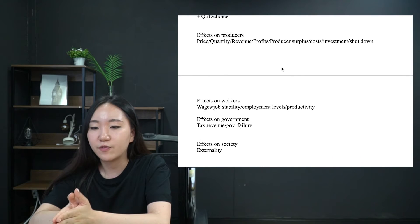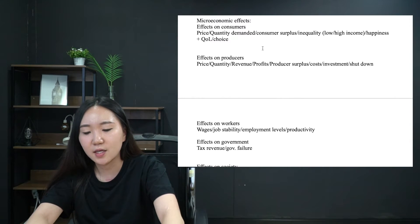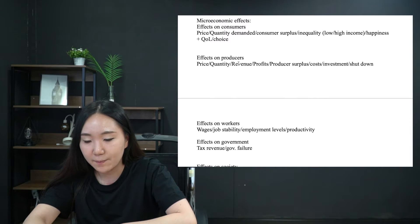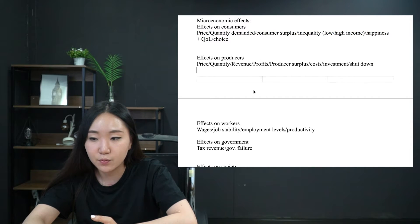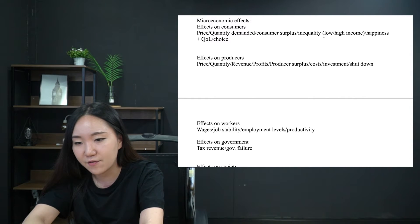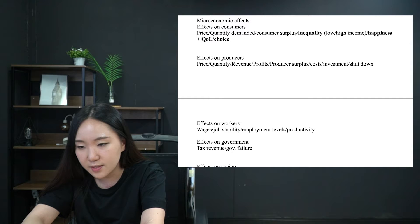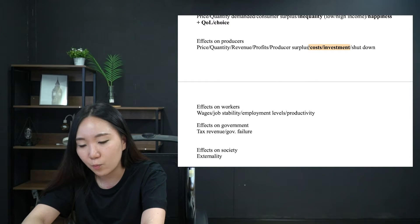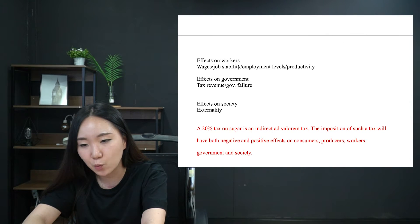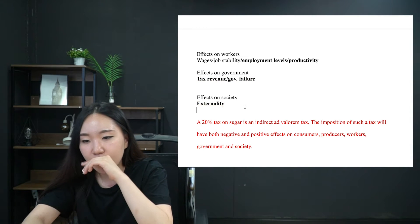For microeconomic effects, I've made a video that organises it slightly better, but essentially you split it into consumers, producers, workers, and government — that's the first thing I would do. Write that down, then immediately write down the sub-points, contextualise, and highlight the ones you think will be most important. For this question — sugar and an indirect tax — I'm definitely going to discuss the tax, investment, cost, and profits for producers. For workers, productivity is a must; wages or employment levels perhaps. For government: tax revenue, government failure, and negative externality of consumption reduced.